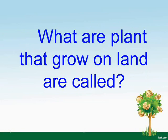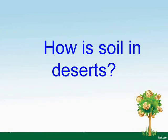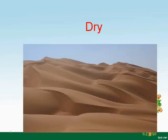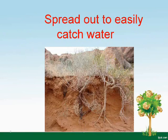What are plants that grow on land called? Terrestrial plants. How is the soil in deserts? Dry. How are the roots of the plant that lives in the desert? They spread out to easily catch water.